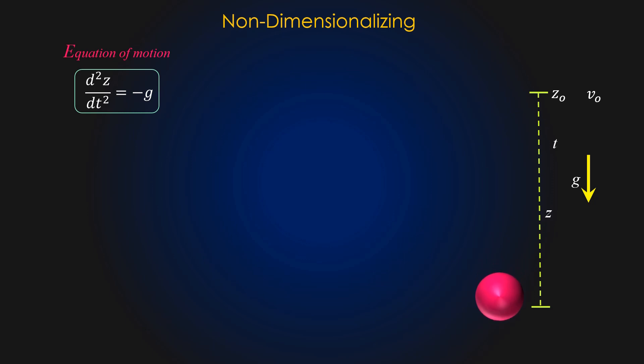In this equation, you can see there are two dimensional variables, z which has dimension of length and t which has dimension of time. Also, there is a gravitational constant g which is a dimensional constant. Two additional dimensional constants are relevant in this particular problem, that is initial location z0 and initial vertical velocity v0.